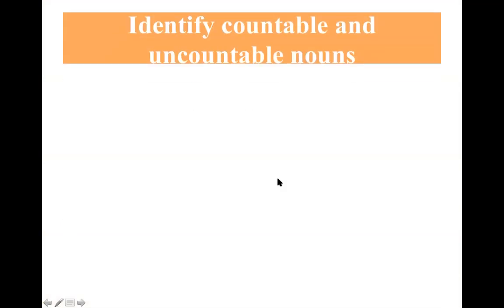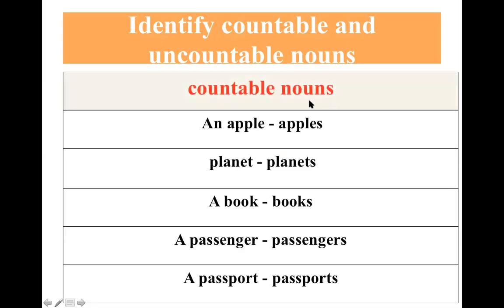Before we start the lesson today, I want to help you identify countable and uncountable nouns. Trước khi bắt đầu vào bài học mới ngày hôm nay, thầy sẽ giúp các bạn nhận biết về danh từ đếm được và danh từ không đếm được. Danh từ đếm được là những danh từ chỉ số lượng có thể đếm được, có dạng số ít và dạng số nhiều, và chúng ta có thể thêm S hoặc ES ở dạng số nhiều.